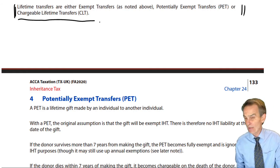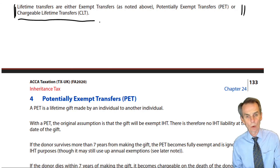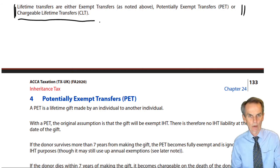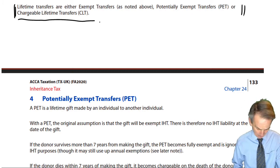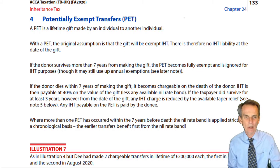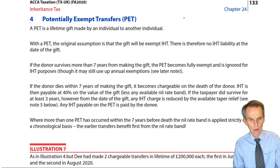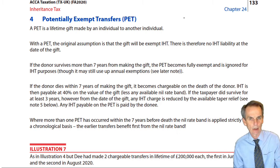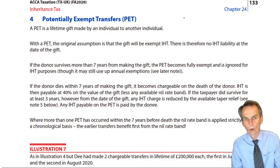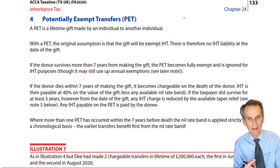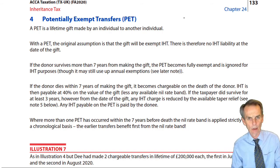All other transfers — the vast majority, being transfers to individuals other than your spouse — were labelled as potentially exempt transfers, or PETs. What we're going to see now is how to deal with not just one PET becoming chargeable, but where two or more lifetime transfers made within the seven years of death become chargeable. This vividly illustrates that IHT is a cumulative donor-based tax. You cannot look at any individual lifetime transfer in isolation and attempt to compute the IHT thereon.